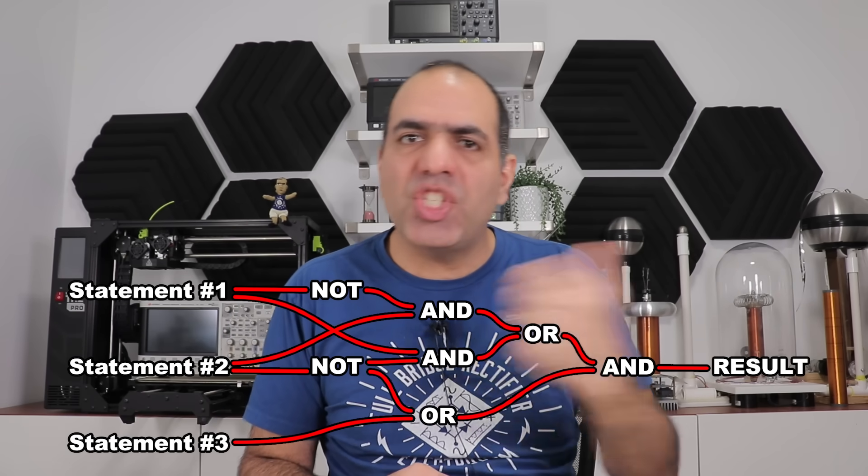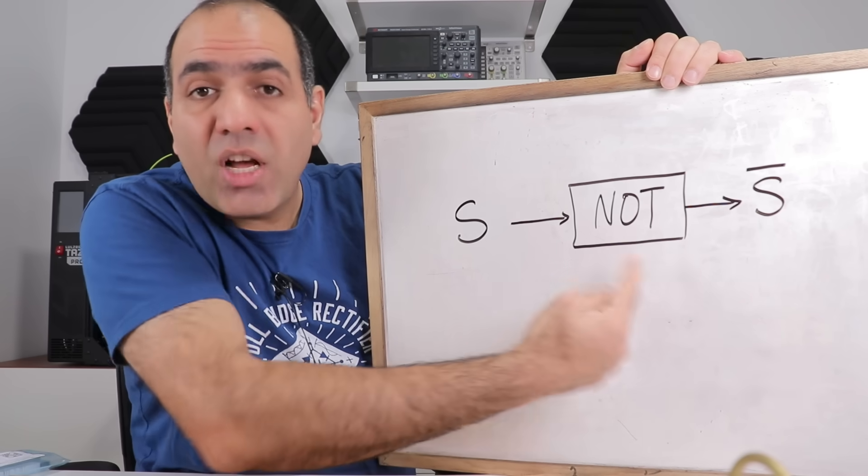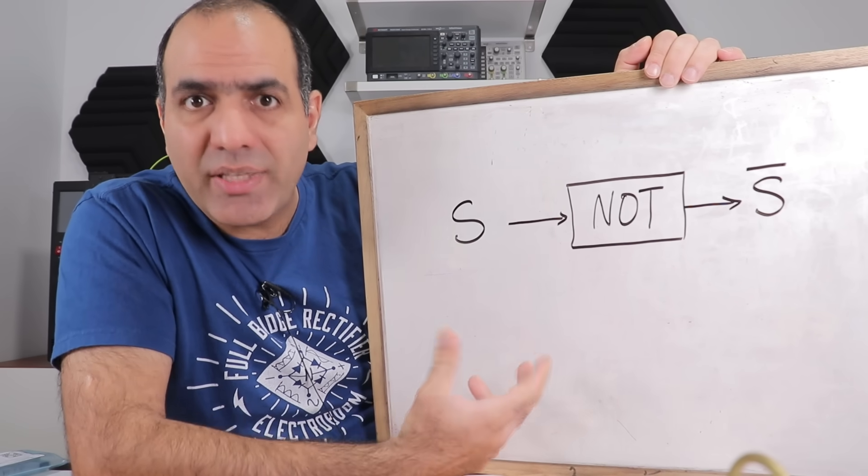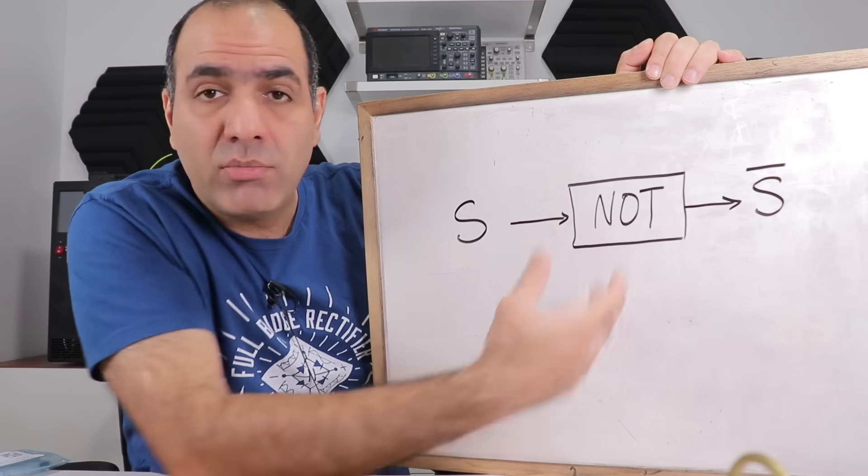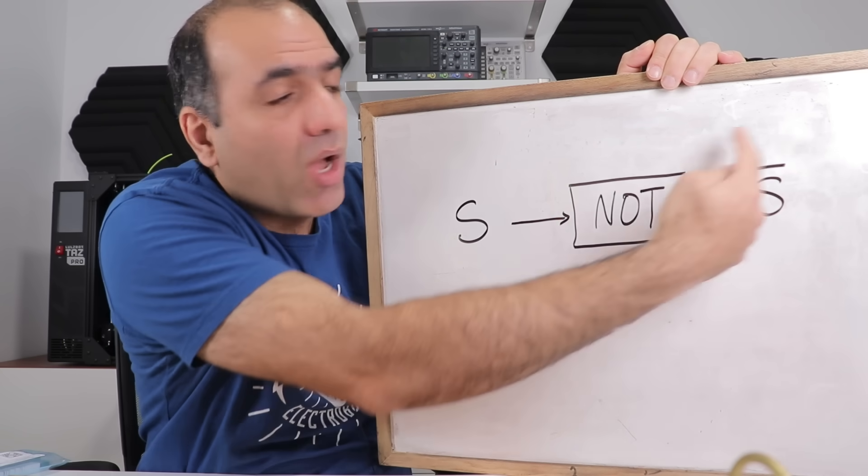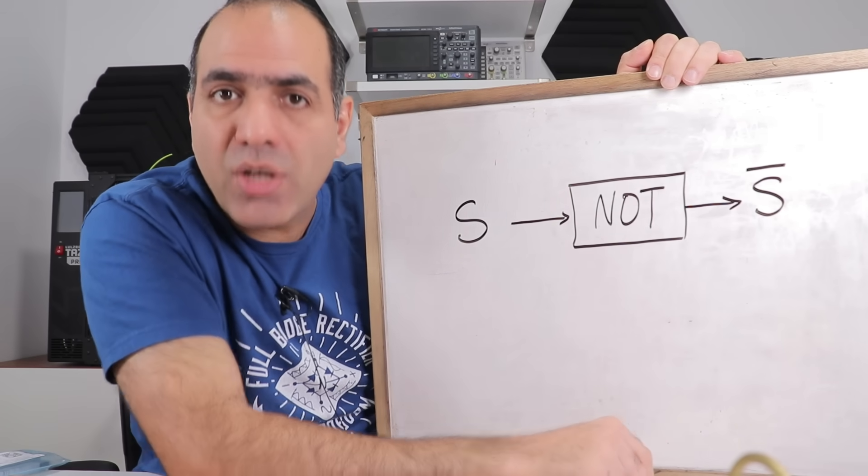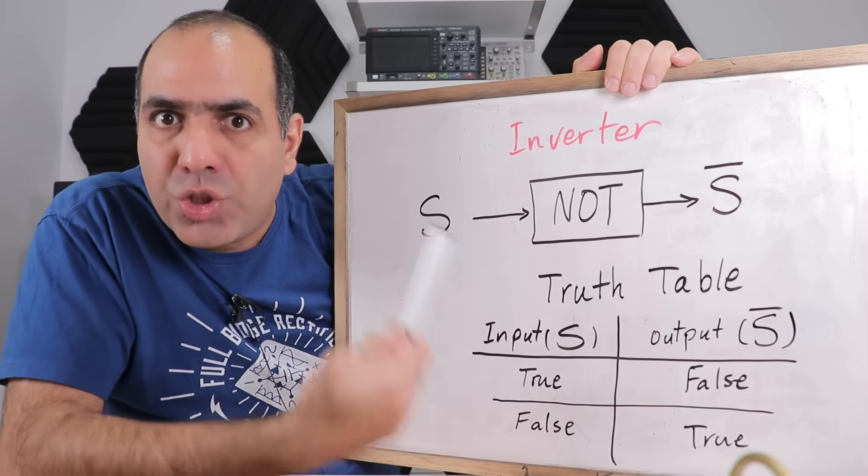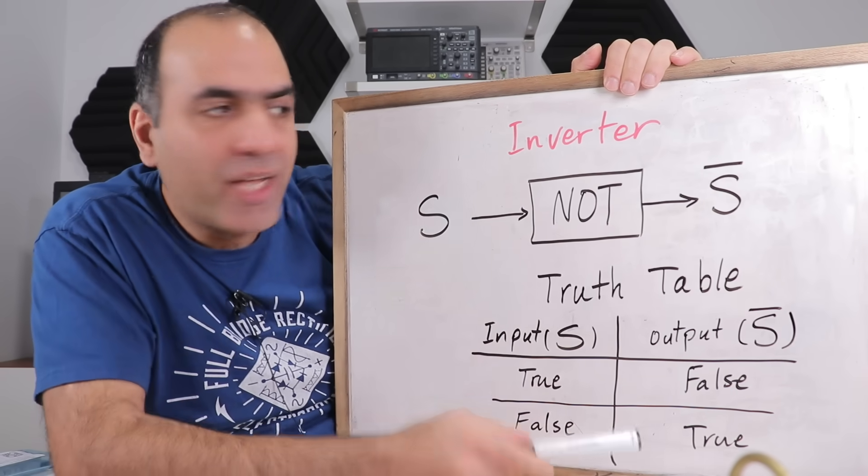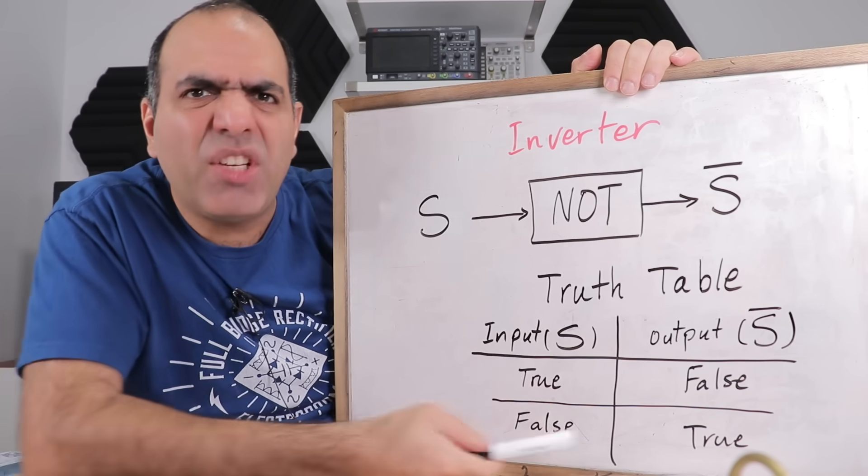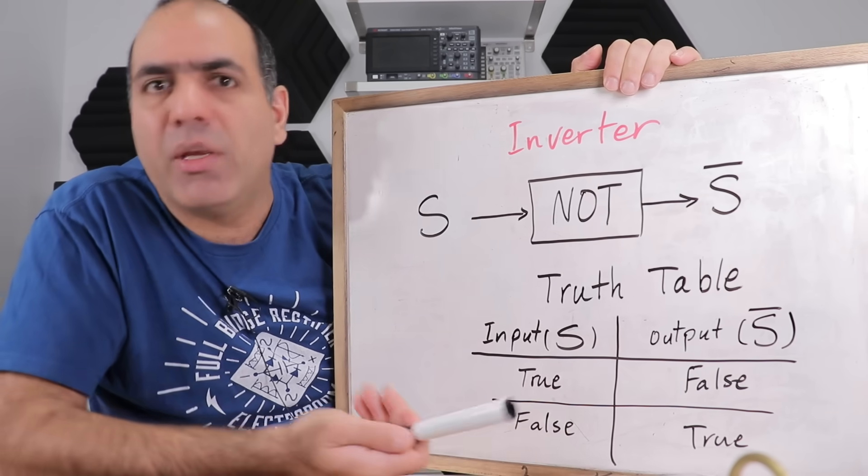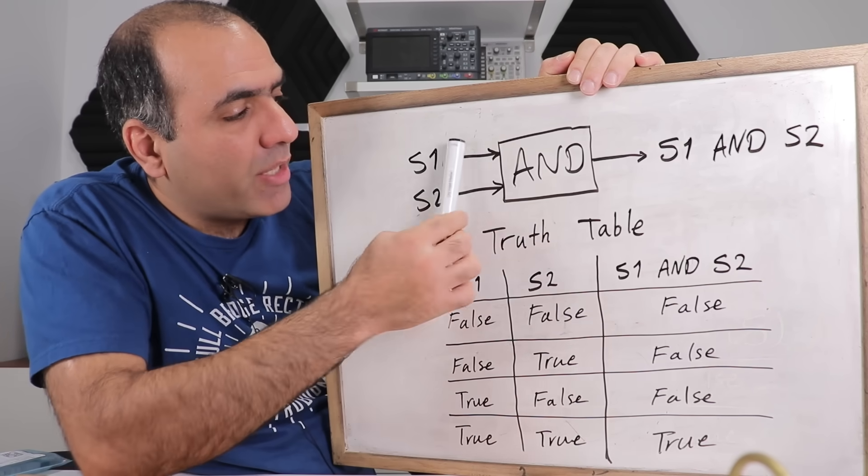For example, notting a statement inverts it, which I'm showing here as a variable that can be true or false. Notting changes the statement to the opposite of whatever it is, shown with a line on top. And so let me introduce you to the truth table, which shows you what outputs you get through your logic based on different inputs. For the inverter, the output is inverted of the input.